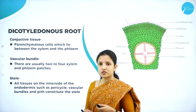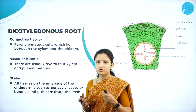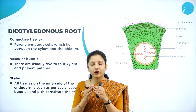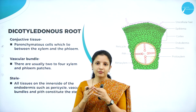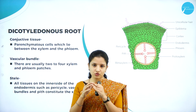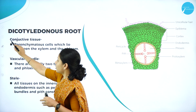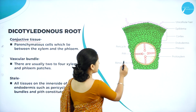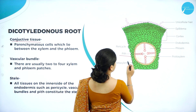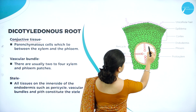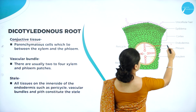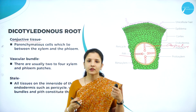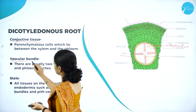Moving on to the conjunctive tissue — the parenchyma cells which lie between the xylem and the phloem form the conjunctive tissue. The xylem and phloem are present in the pith region. In between the xylem and the phloem, there is presence of some parenchymatous tissue which altogether forms the pith region, called the conjunctive tissue.